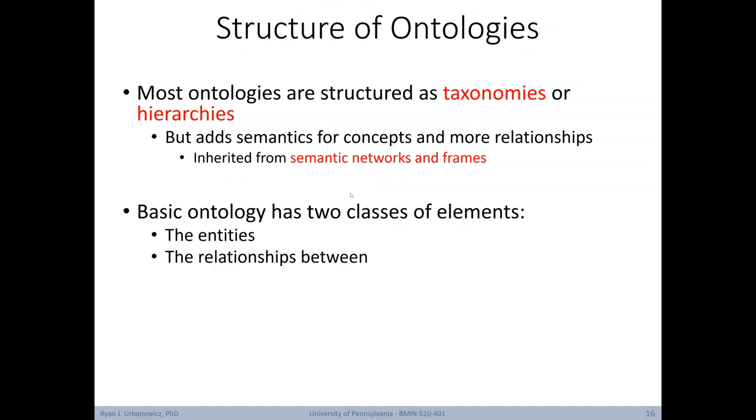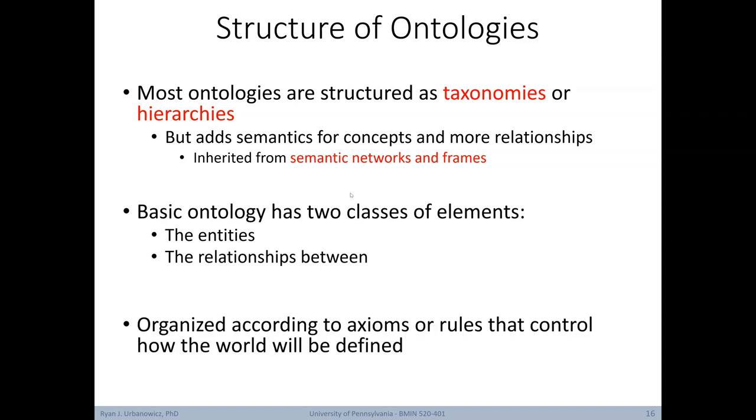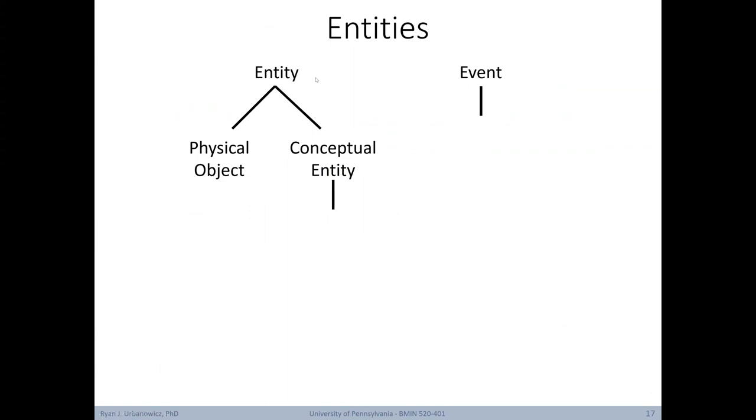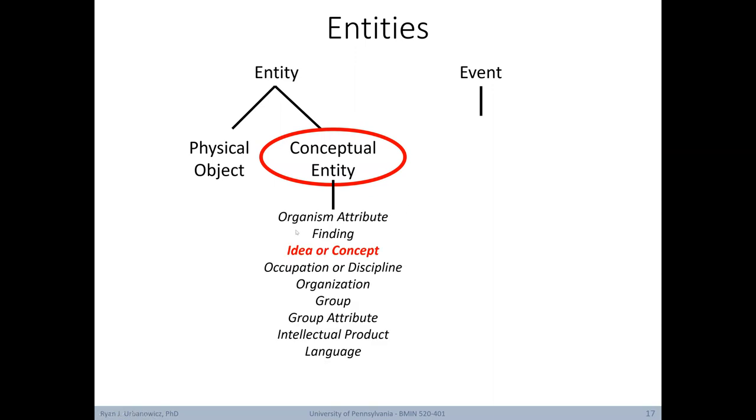In thinking about the structure of an ontology, most are structured as taxonomies or hierarchies, but they add semantics for concepts and to be able to add different kinds of relationships. This is something they inherit from semantic networks and frames. A basic ontology has two classes of elements: entities and the relationships between them. And when we put together ontologies, we try to organize them according to the axioms or rules that control how the world will be defined. Looking more closely at one of the main elements of ontologies, we have entities. Entities can be physical objects, a conceptual entity, or an event.